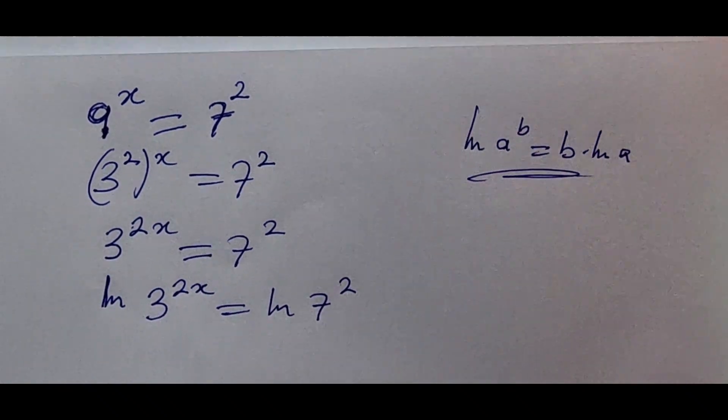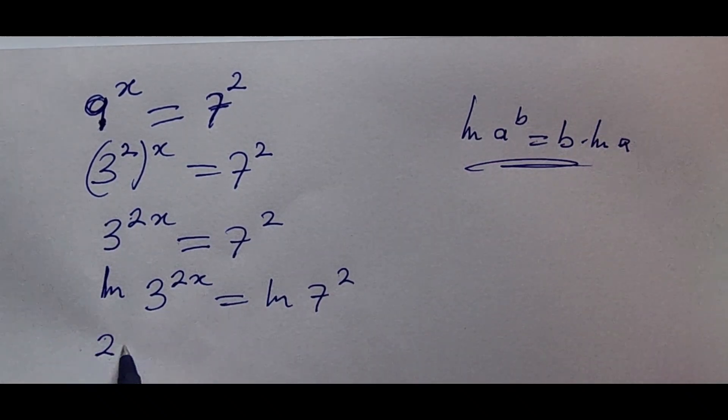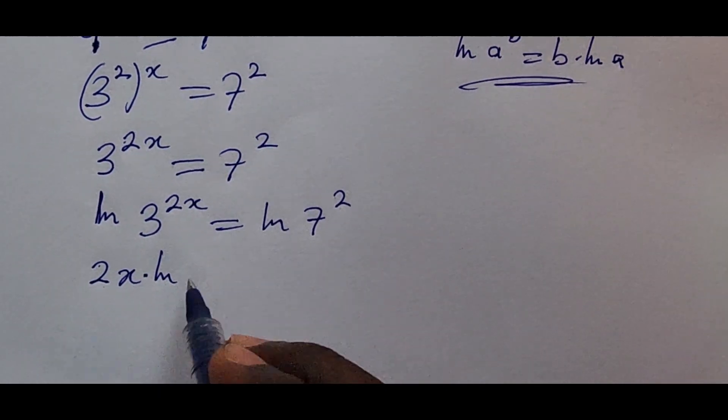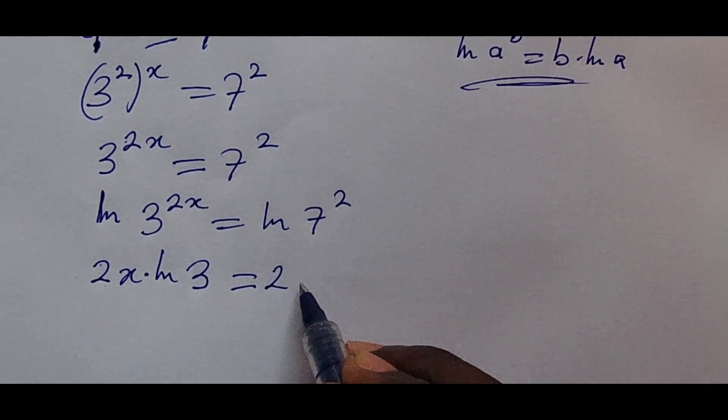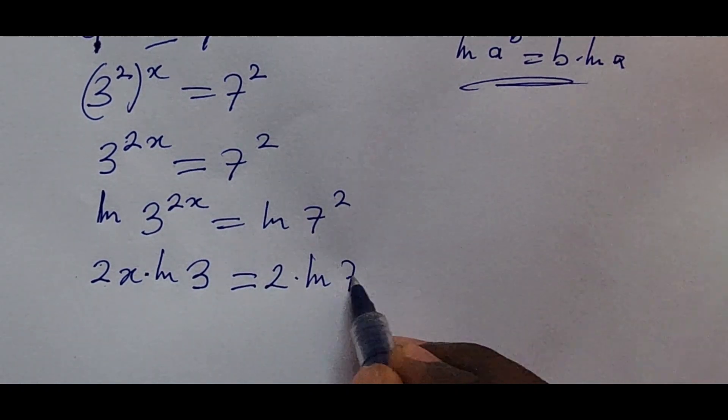So if we apply this, we will have 2x times the ln of 3. This is equal to 2 times the ln of 7.